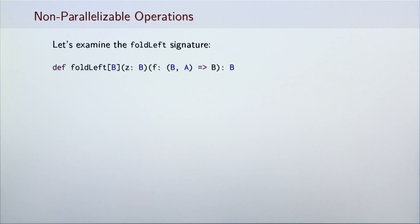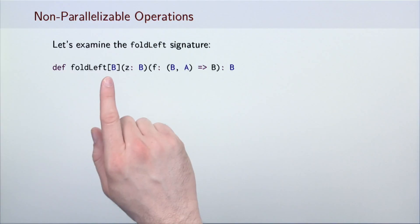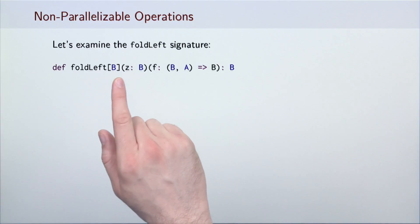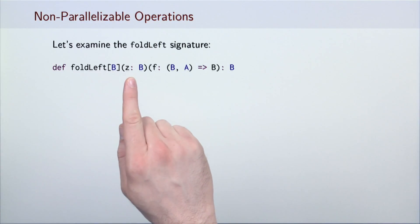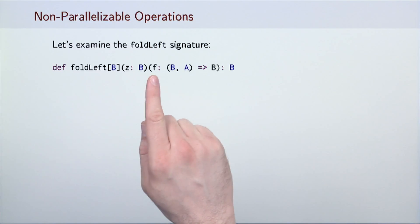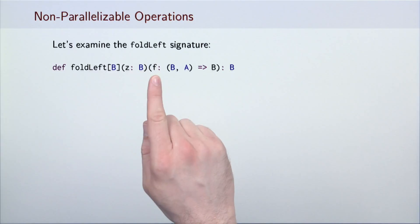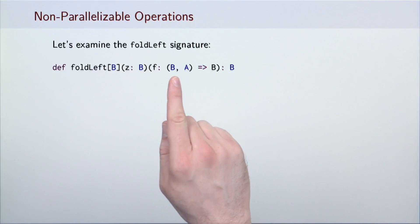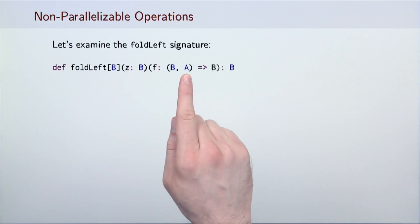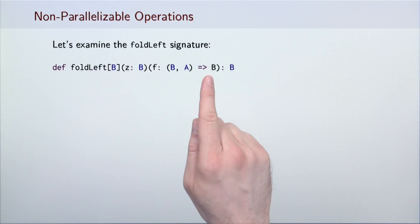We examine the foldLeft signature more closely. The foldLeft method takes a type parameter B, which is the type of the accumulation, a neutral element z of type B, and a function f that combines the accumulation and the elements of the collection into another accumulation.